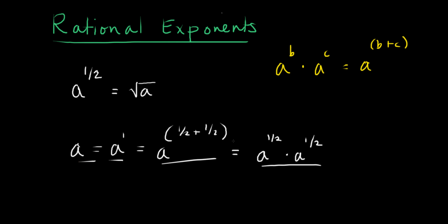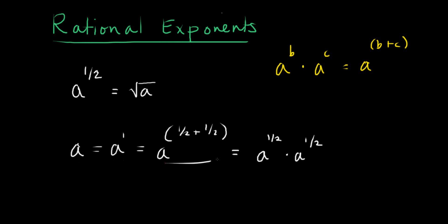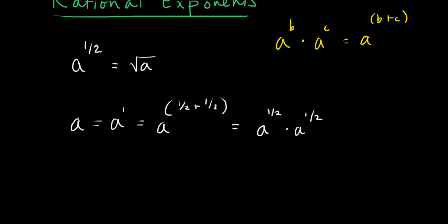So: a equals a to the first, a to the first equals a to the one-half plus one-half, and a to the one-half plus one-half equals a to the one-half times a to the one-half. Since all these expressions are equal to each other, we can cut out the middle and just say that a to the one-half times a to the one-half is equivalent to a.